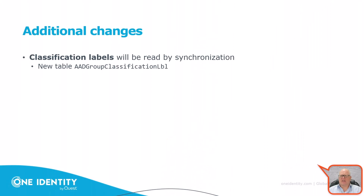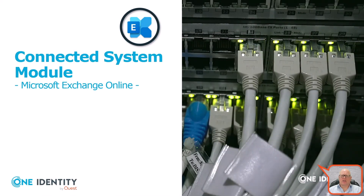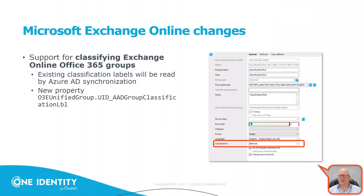Another addition: classification labels can now be read from Azure. We continue with Microsoft Exchange Online properties. The first is classification for Exchange Online Office 365 groups — this is now supported. A new property was added to the O3E Unified Group table called 'classification,' along with a new list of types for that specific Exchange group, for example an internal flag.